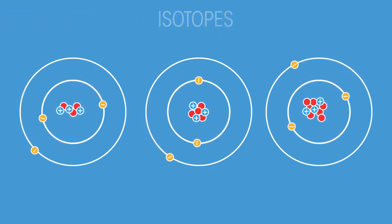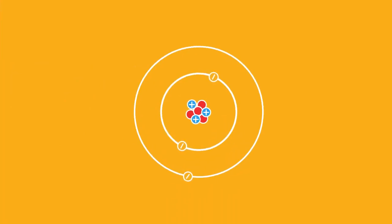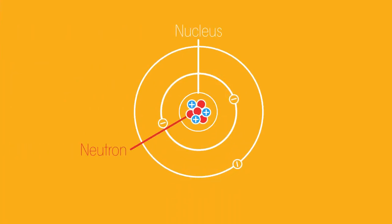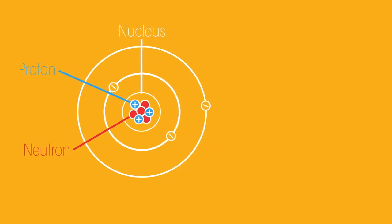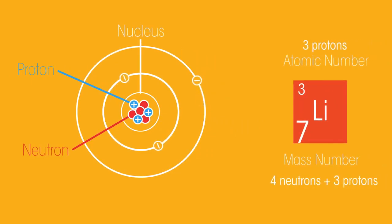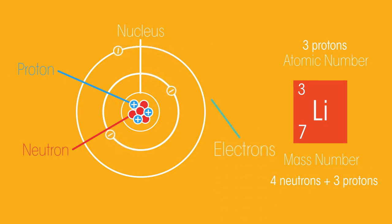Before we start, let's quickly recap the general structure of an atom. The nucleus is made up of neutrons and positively charged protons. The total number of these particles is called the mass number. They each have a relative mass of one. Orbiting the nucleus in specific patterns are negatively charged electrons. These are much lighter — in fact, their mass is so small we can usually ignore it.